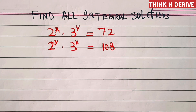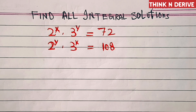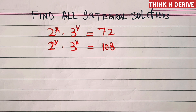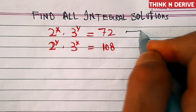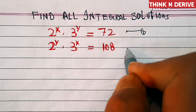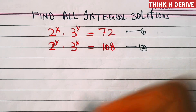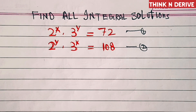Hello and welcome to Think and Derive. Find all the integral solutions of 2 power x into 3 power y equal to 72 — this is equation number one — and 2 power y into 3 power x equal to 108 — this is equation number two. We have to solve this for x and y.